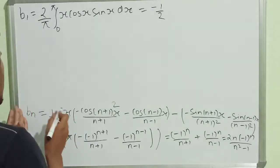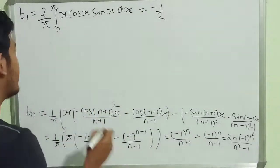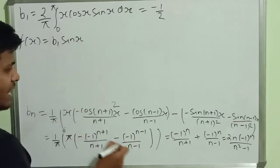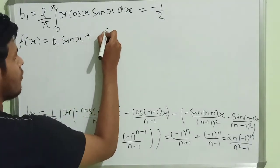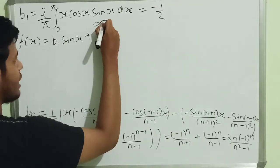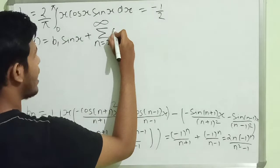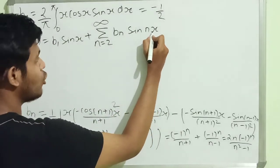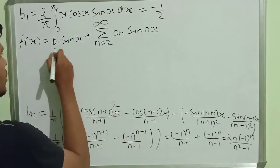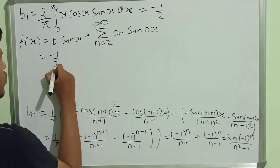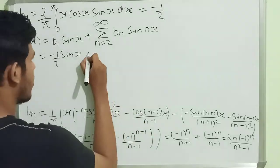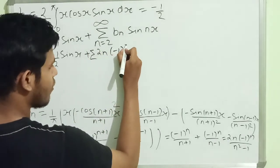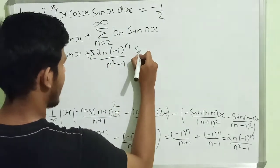Now we have b_1 equals minus 1/2 and the general term b_n equals 2n(-1)^n/(n²-1). We expand the series: f(x) equals b_1·sin(x) written separately, plus summation from n equals 2 to infinity of b_n·sin(nx) — starting from n equals 2 because n equals 1 is undefined.